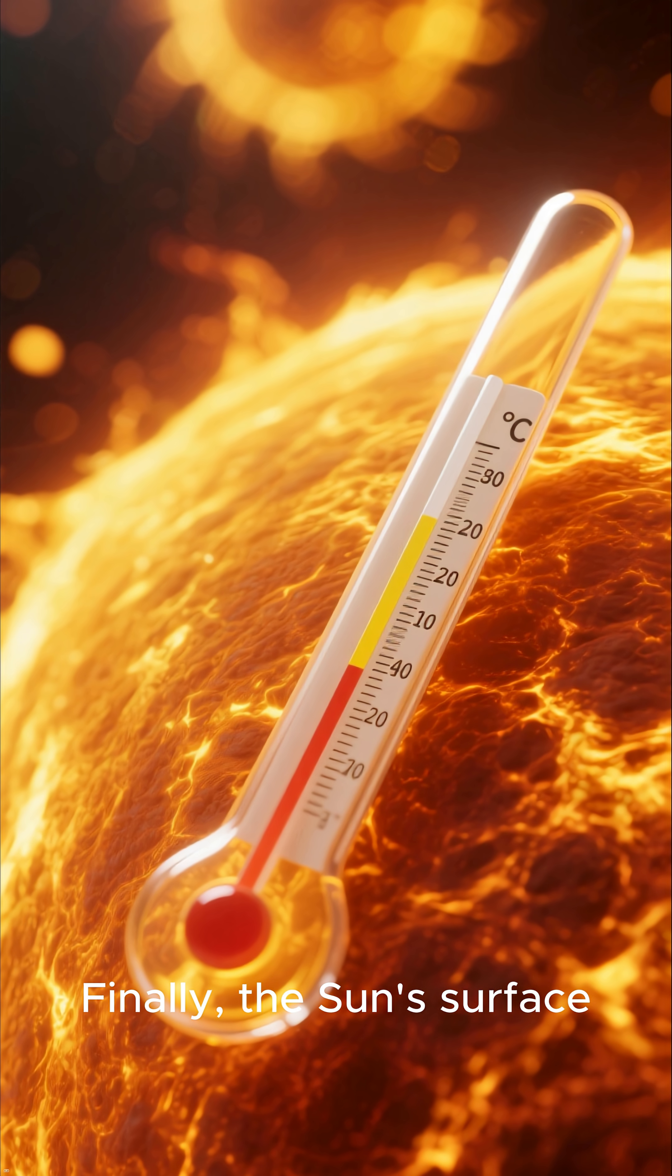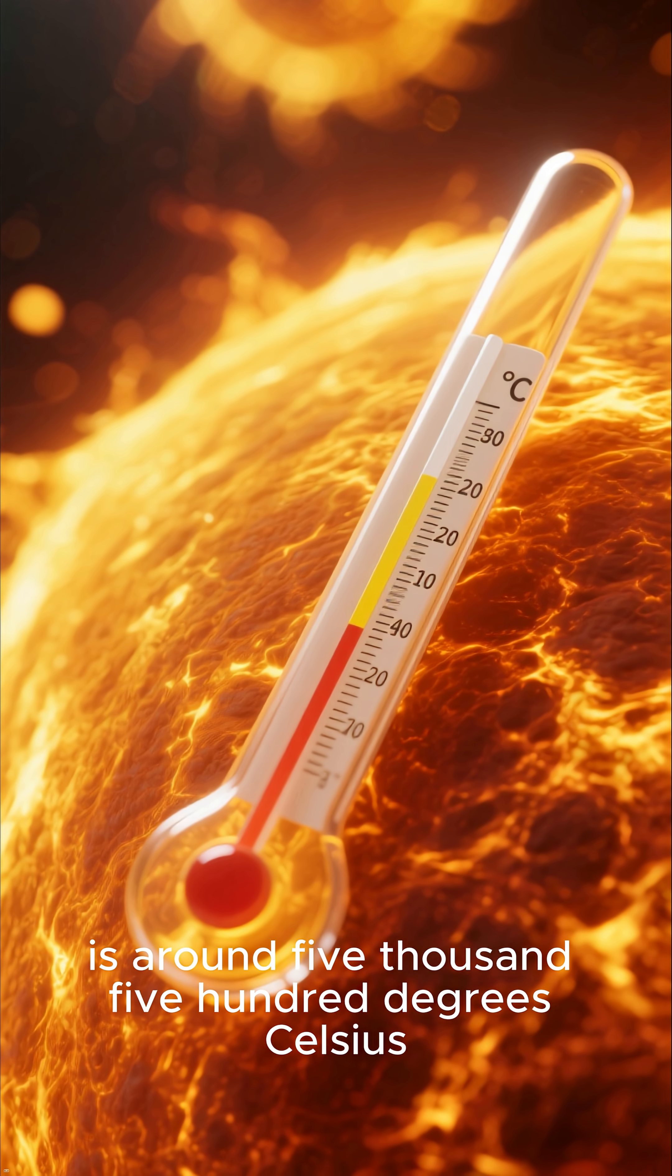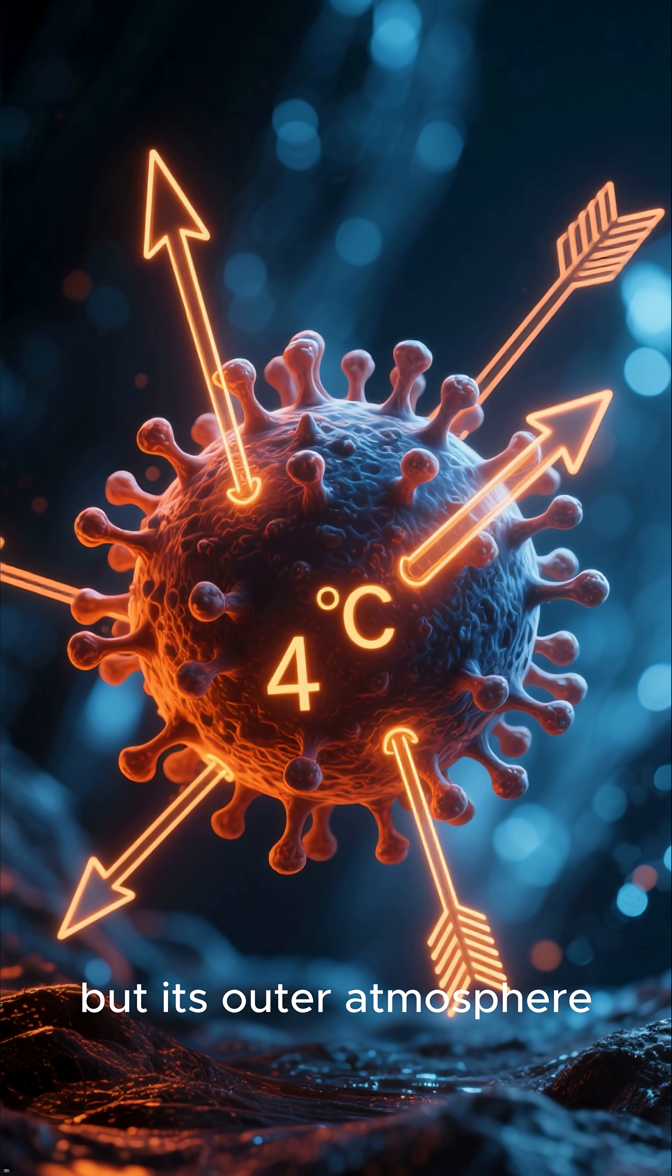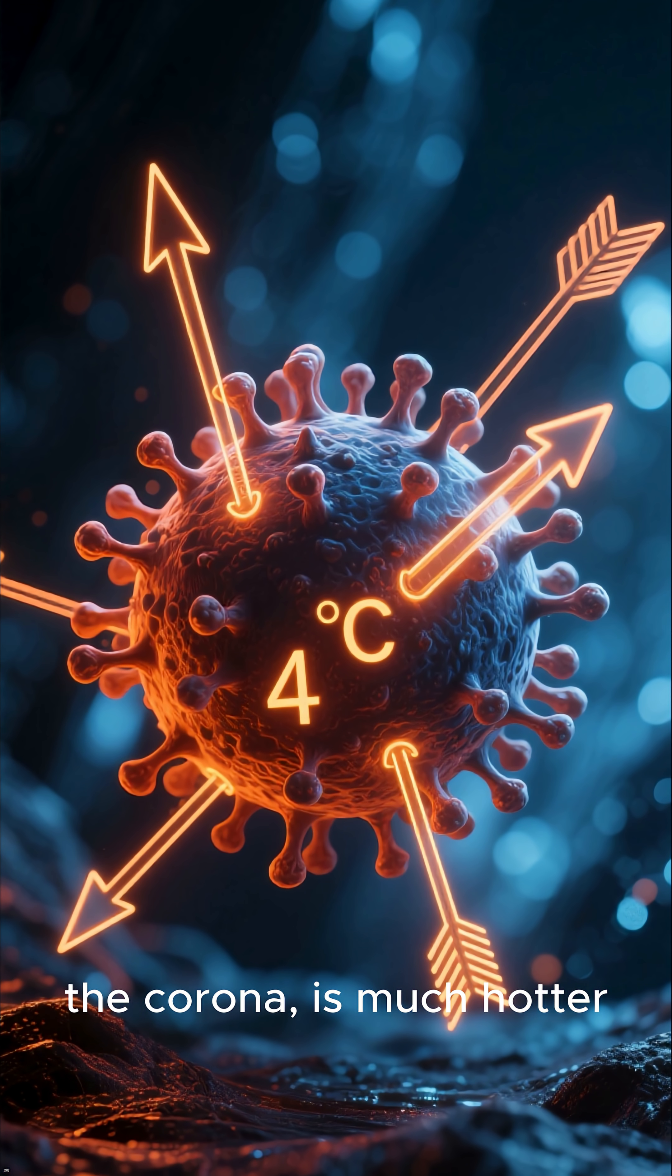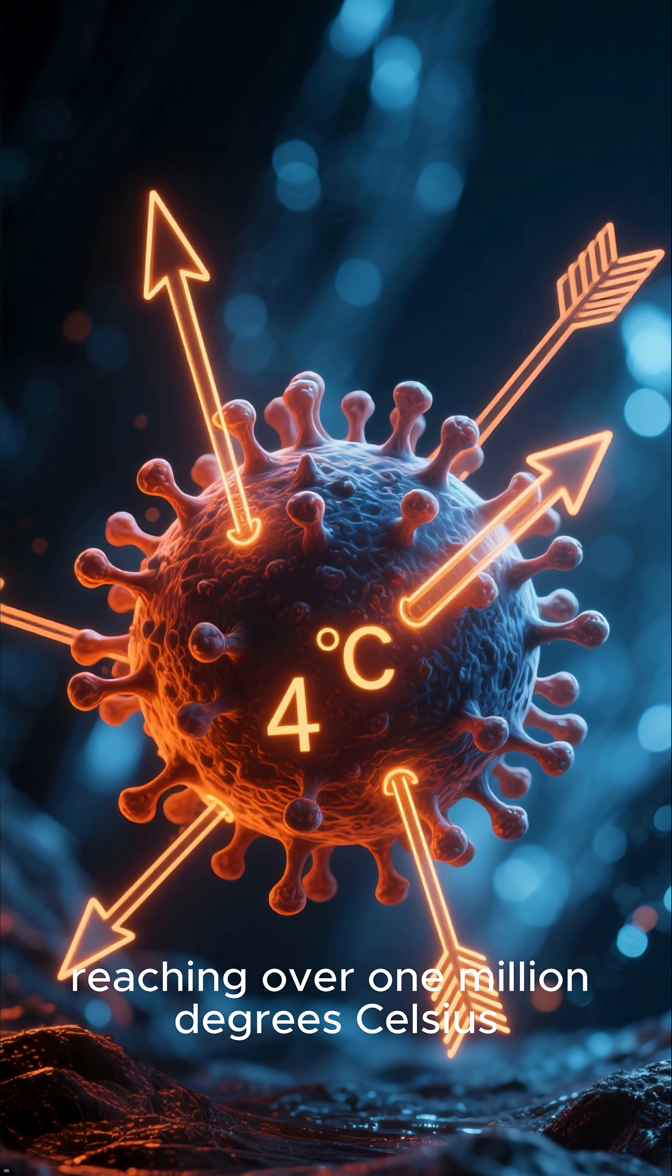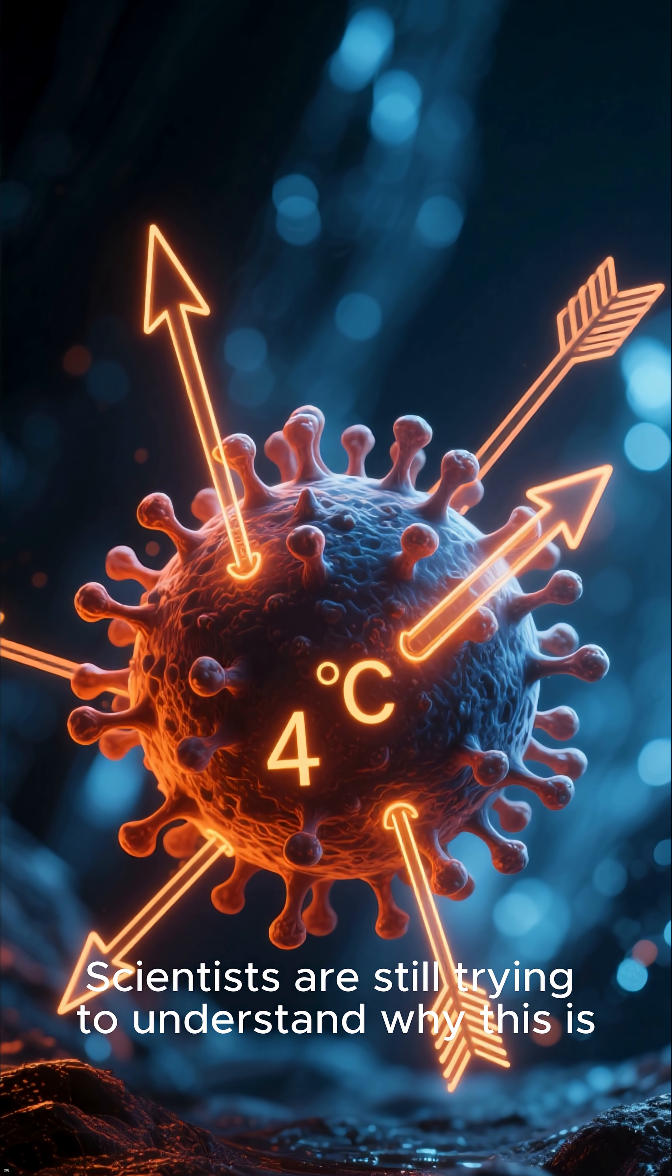Finally, the sun's surface, or photosphere, is around 5,500 degrees Celsius. But its outer atmosphere, the corona, is much hotter, reaching over 1 million degrees Celsius. Scientists are still trying to understand why this is.